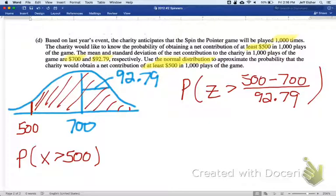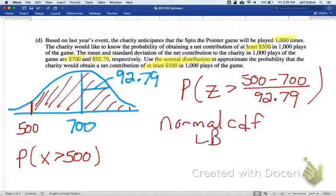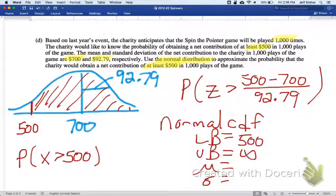So that's the same as asking, what's the probability that the Z-score is greater than? Our boundary is 500, our mean is 700, and our standard deviation is 92.79. And then calculating that, we'd use normal CDF. Normal CDF. Lower bound, upper bound, mean, and standard deviation. The lower bound would be 500. The upper bound is infinite. The mean is 700. And the standard deviation is 92.79.